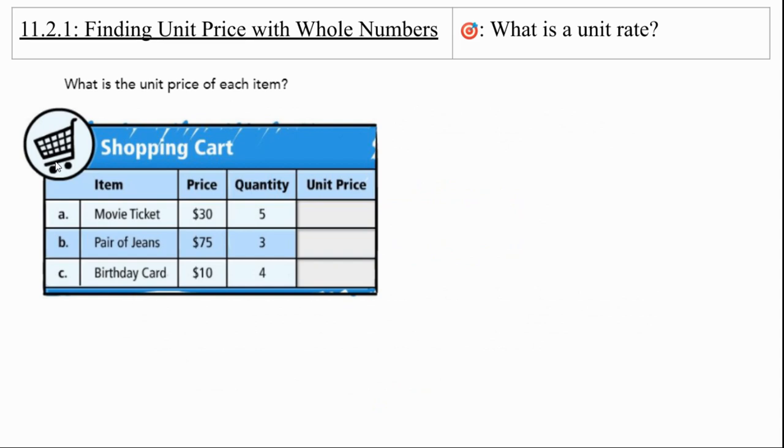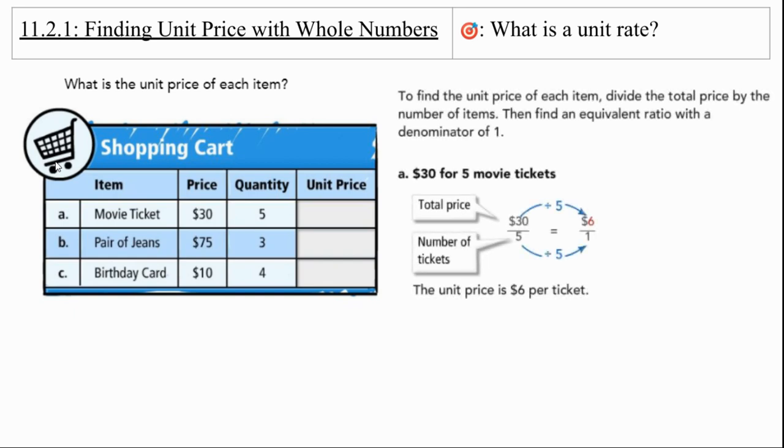We're going to do a little bit of practice here. What's the unit price of each item? So we take a look at the first item. It's $30 for five movie tickets. So we're going to take that $30 over five, making it into a ratio. We're going to divide both terms of our ratio by five, and we're going to get $6.